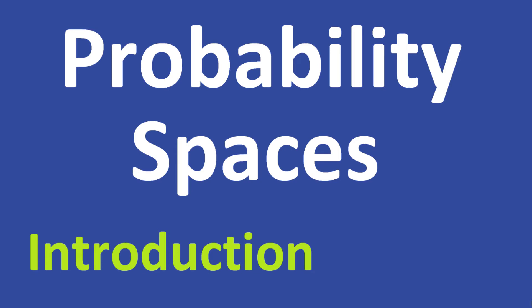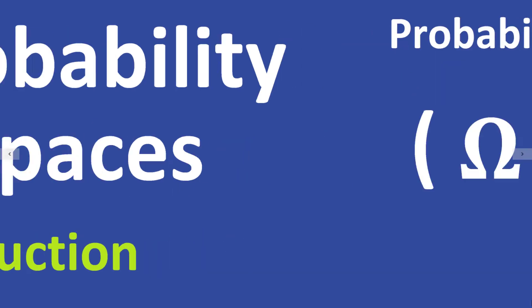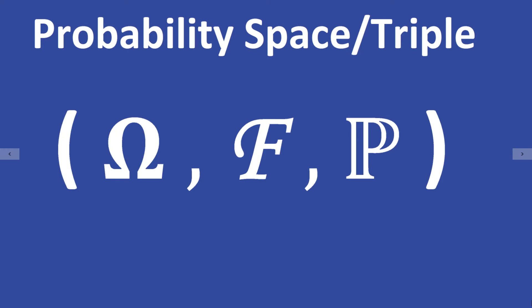In this video I will explain probability spaces. A probability space is also called a probability triple because such a space consists of three elements.